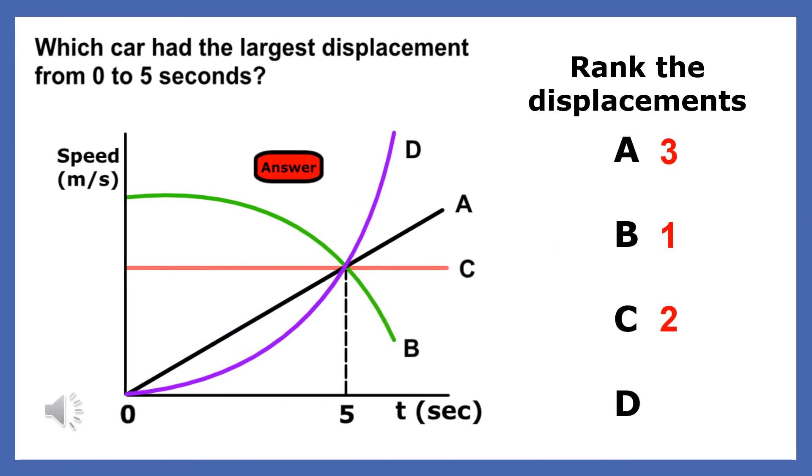The object with the fourth greatest displacement from 0 to 5 seconds is object D, which has the smallest area under the plot.